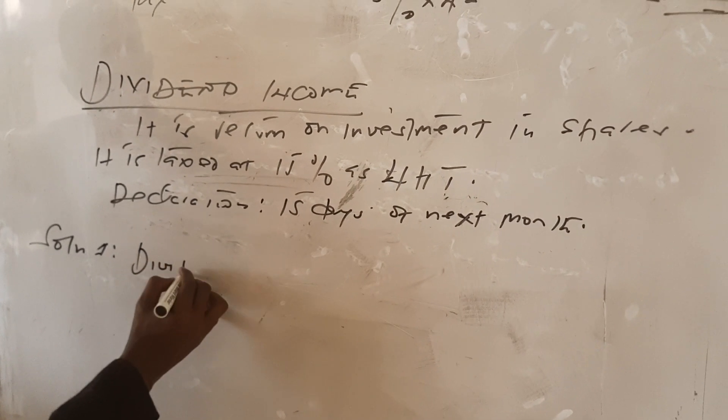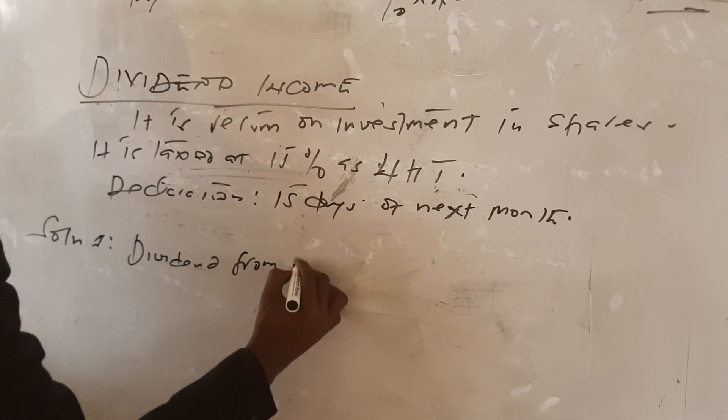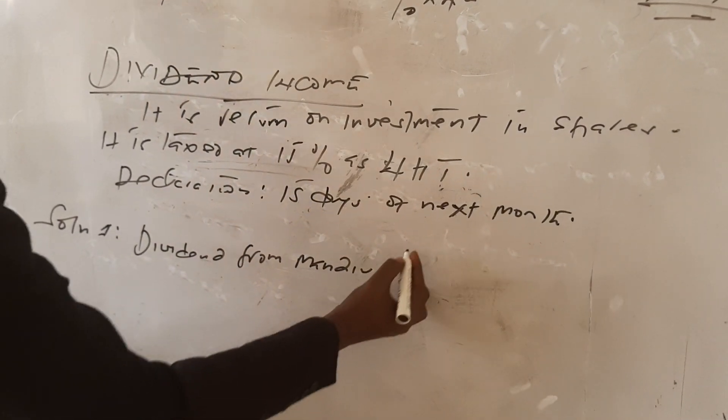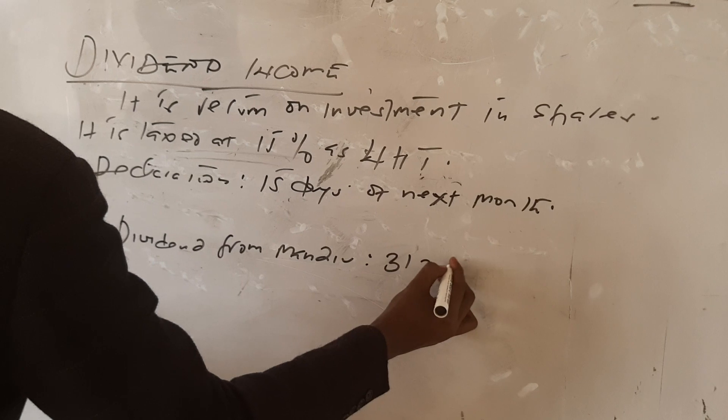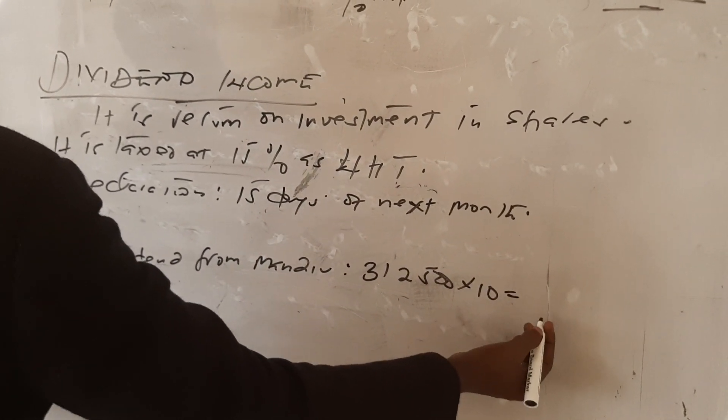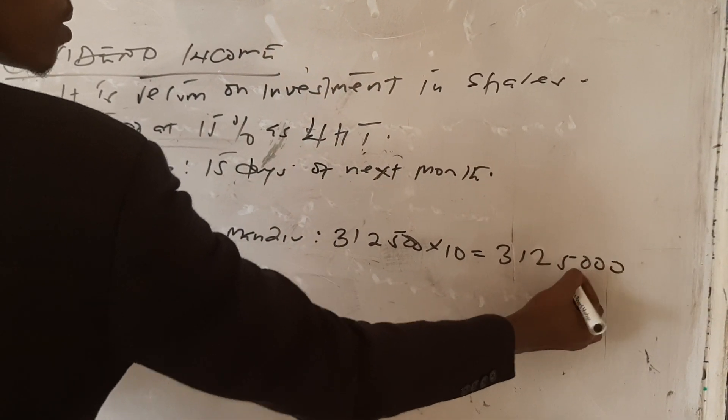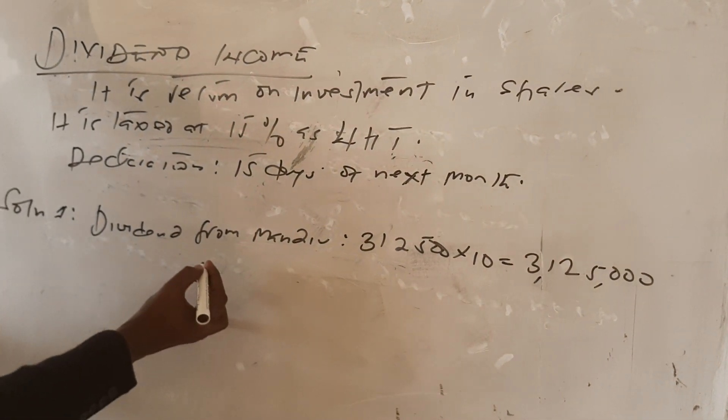For Mandeve Company, the taxable amount is 312,500 times 10, which gives me 3,125,000.